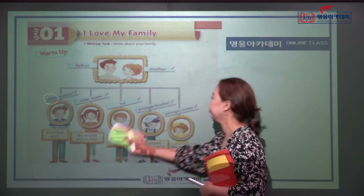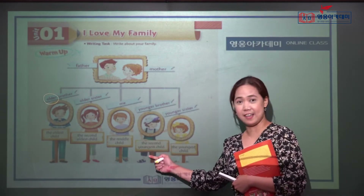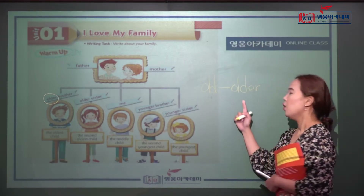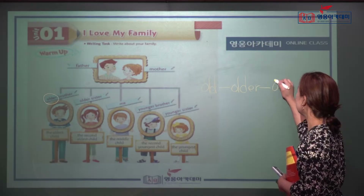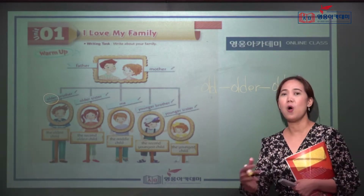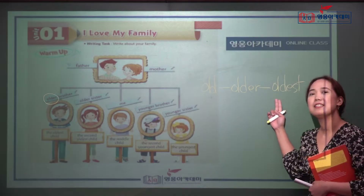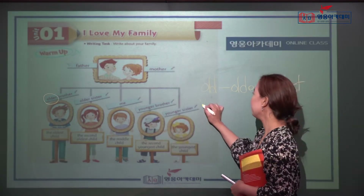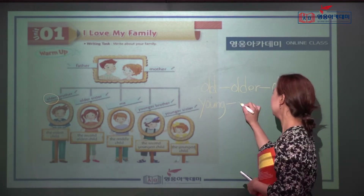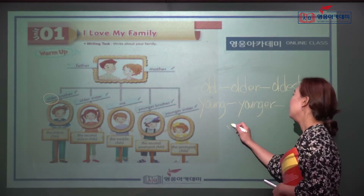Now how about 'oldest' and 'youngest'? Old — older, which means more old — and then 'oldest,' which means the most old. So 'older' is comparative and 'oldest' is superlative. The same for the adjective 'young': younger is comparative, and the superlative is 'youngest.'